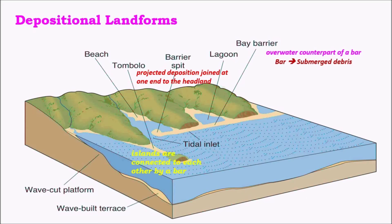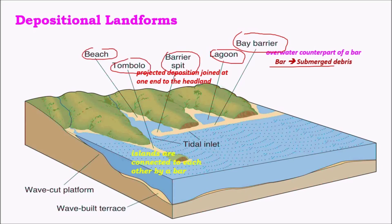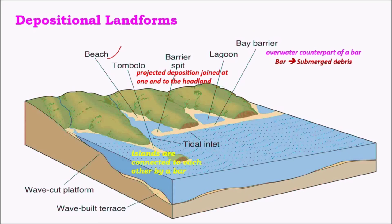Coming to marine depositional landforms, the major ones are bar and bay barriers, lagoons or estuaries, barrier spits, tombolos, and beaches. The most important of all is the beach, which is an accumulation of minute sediment left after wave action and is an important tourist attraction. A tombolo is a region where a bar or marine debris is connected to a small island like a bridge — this bridge-like structure is called a tombolo.